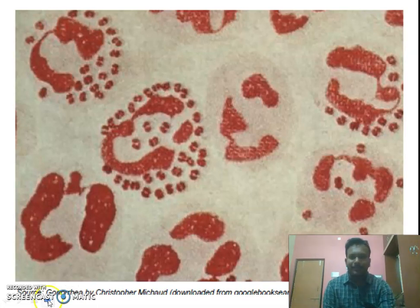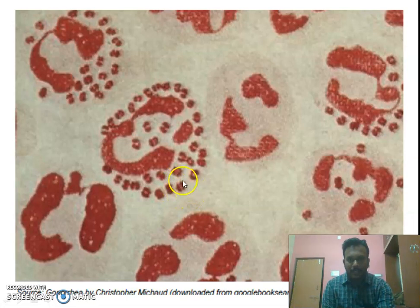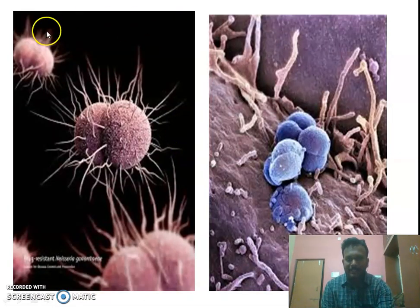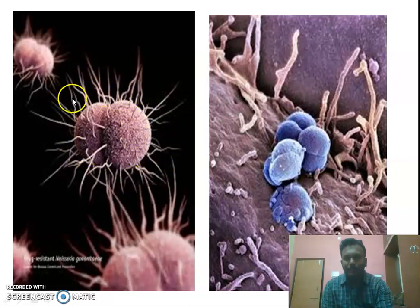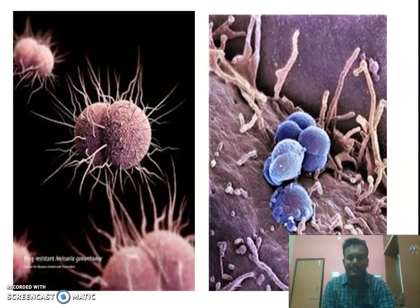In this slide we can observe Neisseria gonorrhoeae as smaller dots where we will observe a diplococci shape, and here we can see the 3D picture of this Neisseria gonorrhoeae. These are the different flagellae which help the movement of Neisseria gonorrhoeae and allow it to tightly adhere to the walls of epithelial cells.